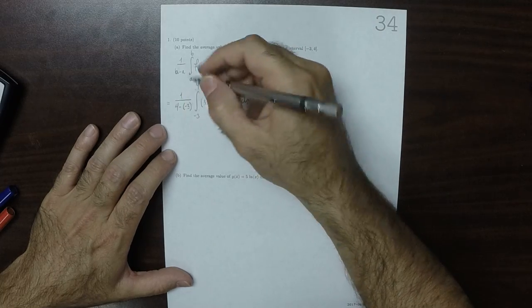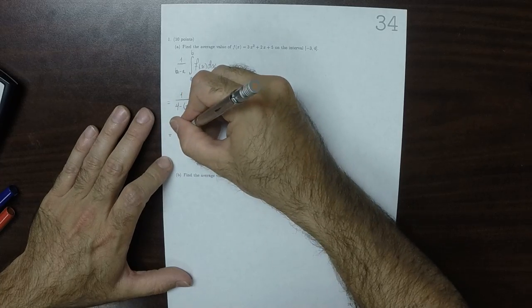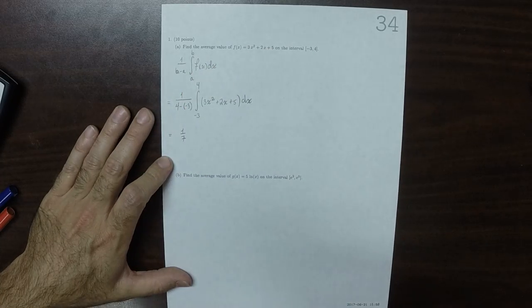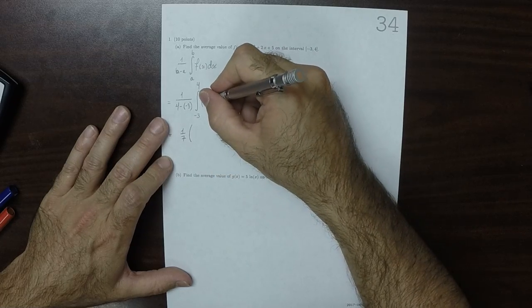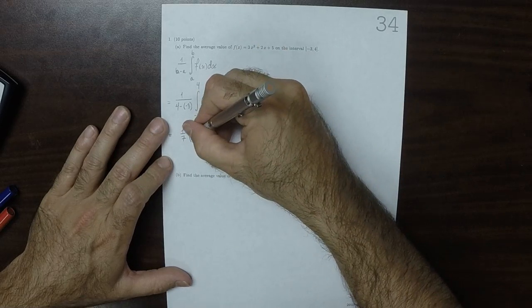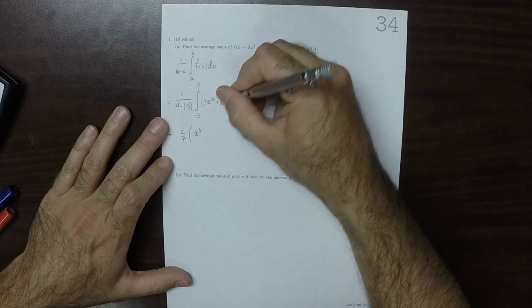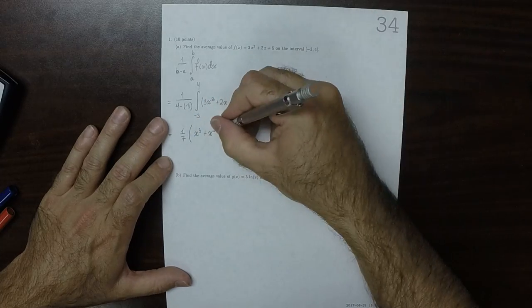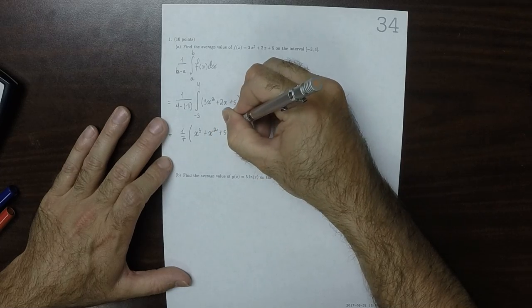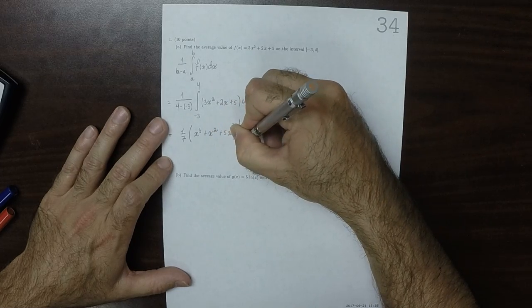Well, 4 minus negative 3 is 7, so that's 1/7th. And then now I'll use the fundamental theorem. So the antiderivative is x cubed plus x squared plus 5x. And then we're going to do this from negative 3 to 4.